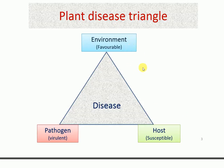The pathogen tends to infect the host because it needs a habitat to complete its life cycle. It moves toward the susceptible host. So if the pathogen is virulent in nature, gets a favorable environment, and the host is susceptible, it causes disease. This is how the disease triangle gets completed and the pathogen causes disease.